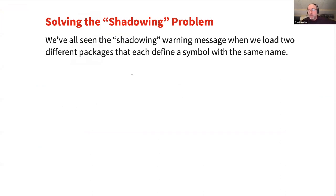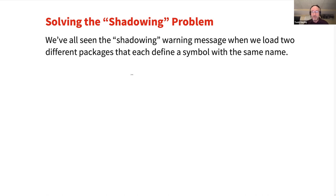Now I'm going to step away a little from pure PACLIT stuff to talk about something that's a new feature in Mathematica 13 that's quite important to the PACLIT story: solving the shadowing problem. We've all seen the shadowing warning you get when you load two different packages that each define a symbol with the same name. When I say needs of some package, and it defines a symbol foo, and then I say needs of some other package that also defines a symbol named foo, I'll get that familiar shadowing warning. The problem is: which foo is it referring to?